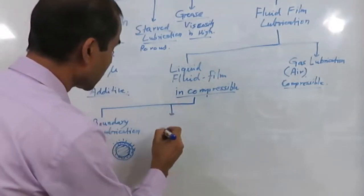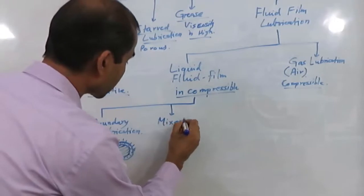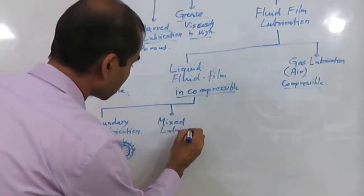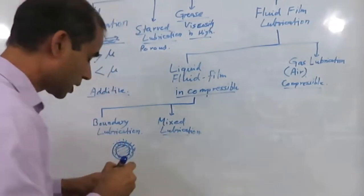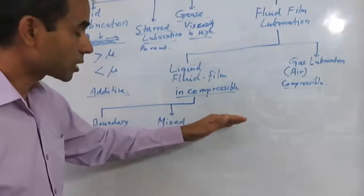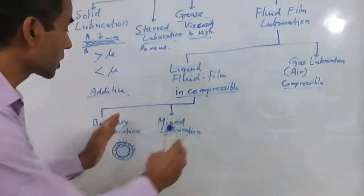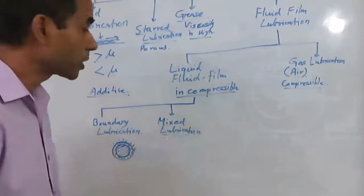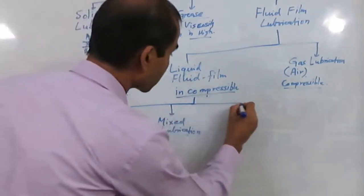The second type is called mixed lubrication. Mixed lubrication is basically a combination of boundary lubrication and hydrodynamic lubrication. Let's now discuss hydrodynamic lubrication.